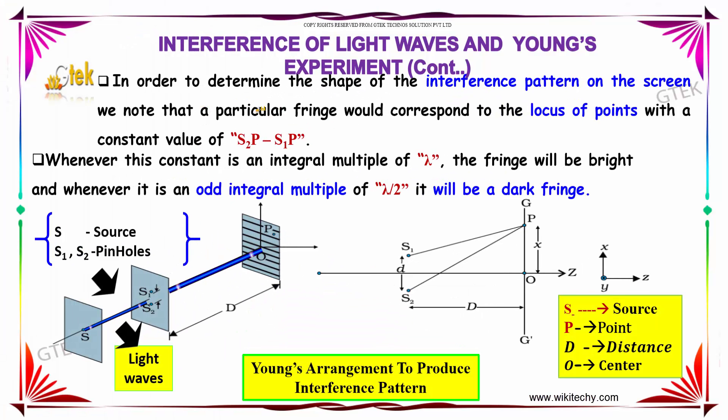In order to determine the shape of the interference pattern on the screen, we note that a particular fringe would correspond to the locus of points with the constant value of S2P minus S1P.